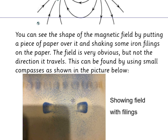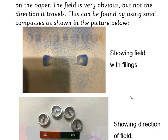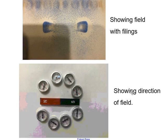Here we can see the field around the magnets. We don't know which way it's going, but we can find out by using small compasses. Here we have the same magnet with some small compasses. You can see the field is going from North to South. That shows the direction of the field.